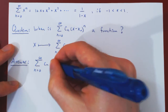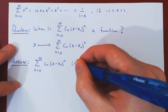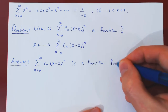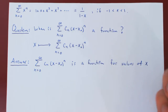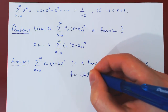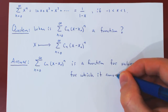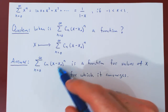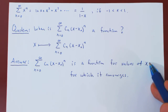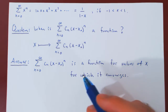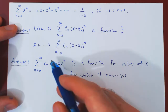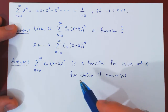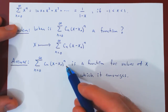So, a general power series is a function for values of x for which it converges. Asking when a general power series is a function is simply asking to find the values of x for which the series converges. The question then is: how are we going to determine whether a power series converges or diverges? For which x values will the series converge, therefore giving us a function, and for which values will it diverge, therefore giving us nothing?